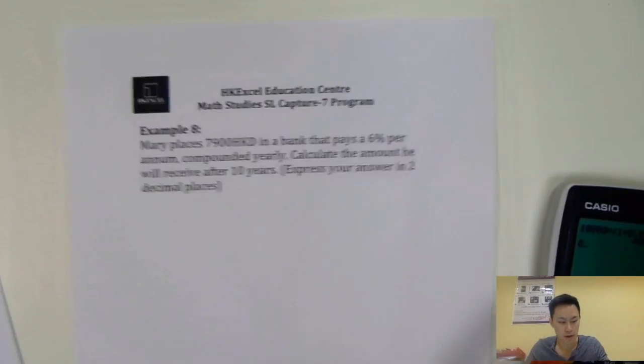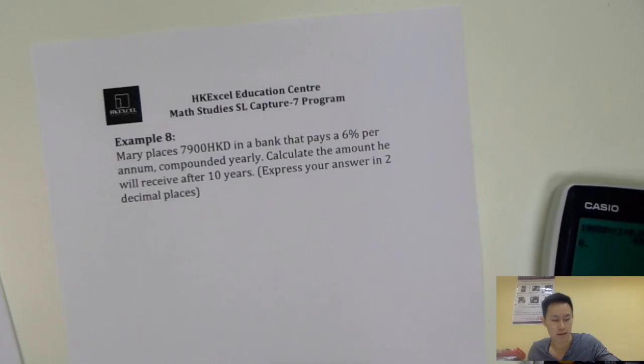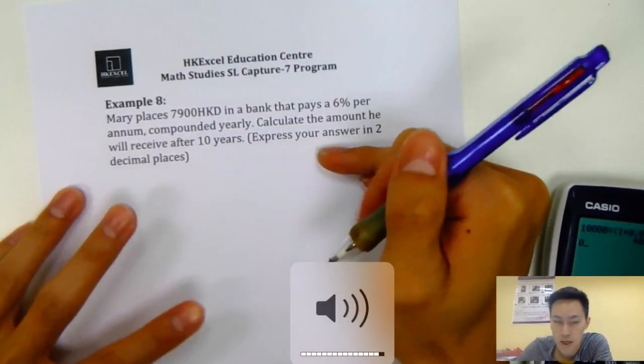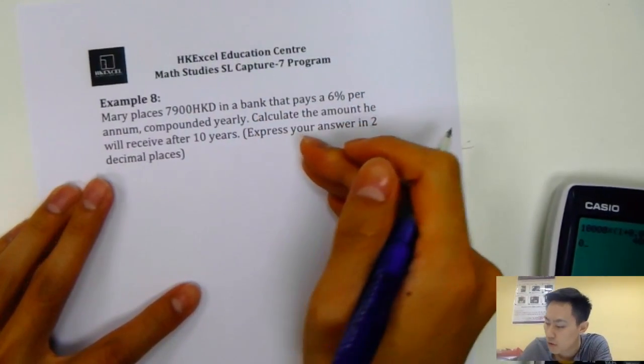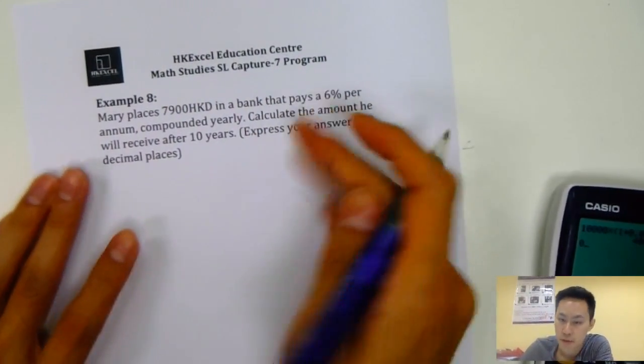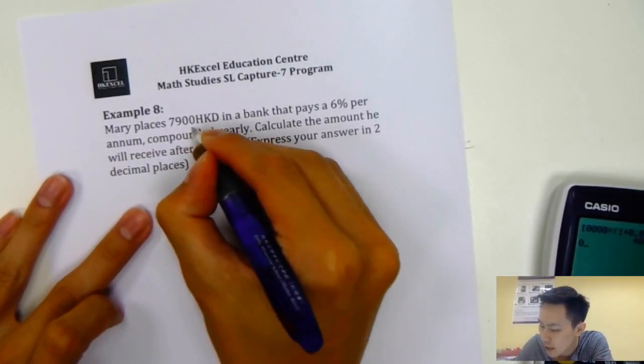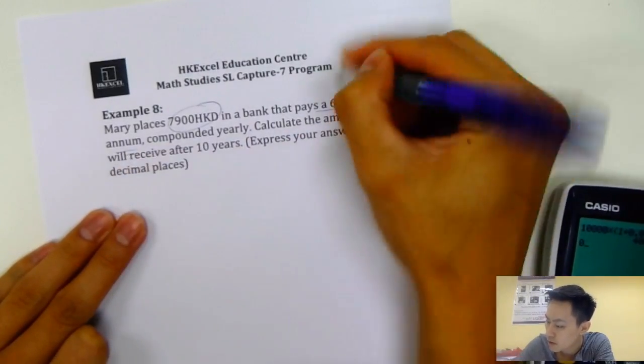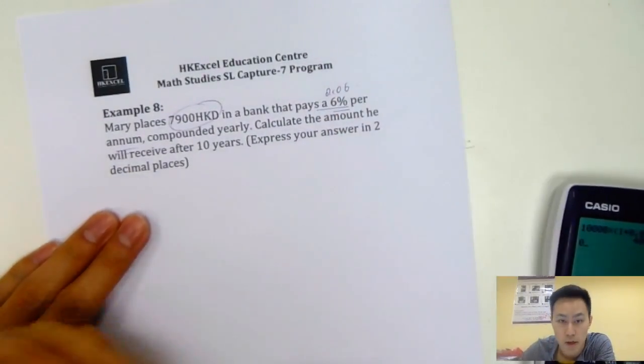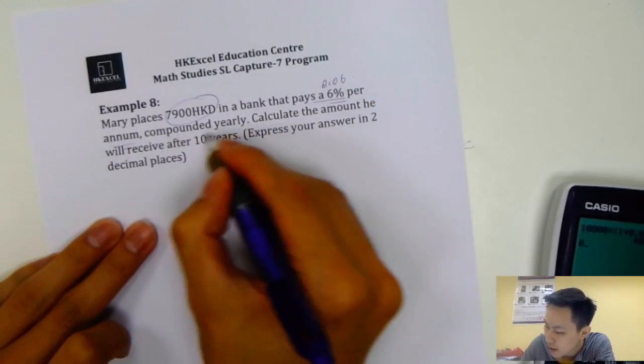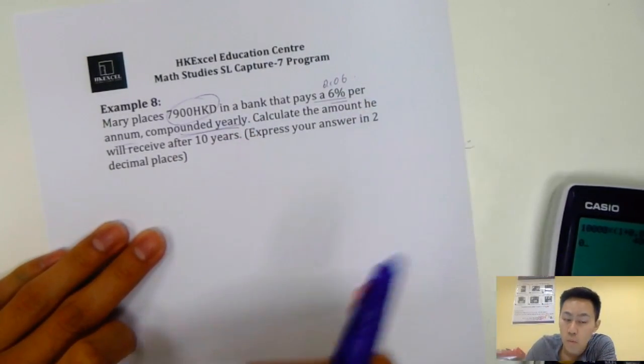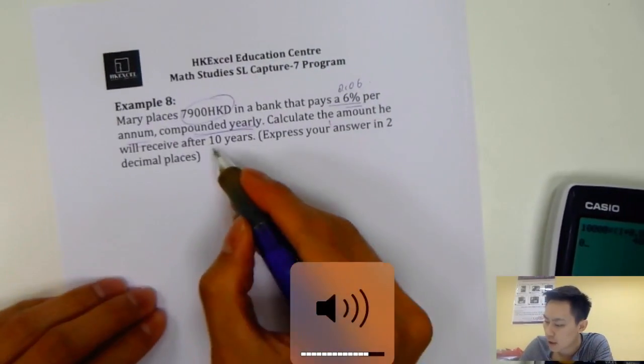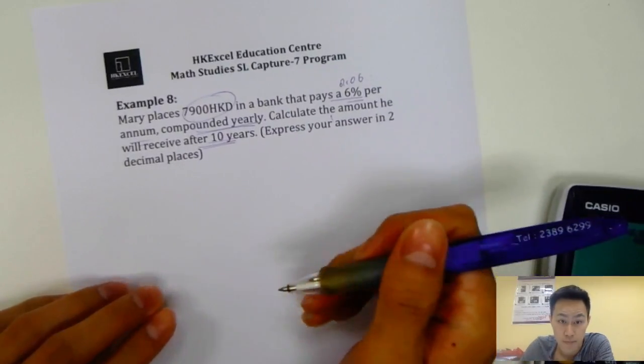The first question would be on compound interest. This is a must question type in your IB exam. You need to know all the question types for compound interest, but in this video I'm only going to share one type. Mary placed $7,900 HK into the bank that pays 6% per annum compounded yearly. So the first thing I will do is convert 6% to 0.06 decimal places. Compound yearly means after one year, you'll get the interest. Calculate the amount she will receive after 10 years.